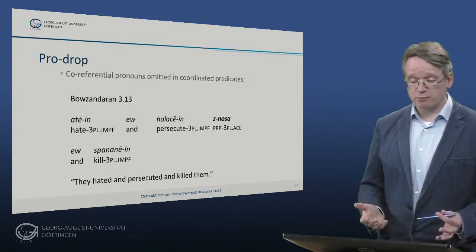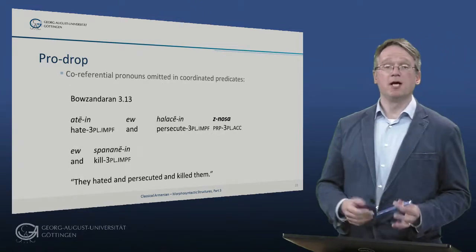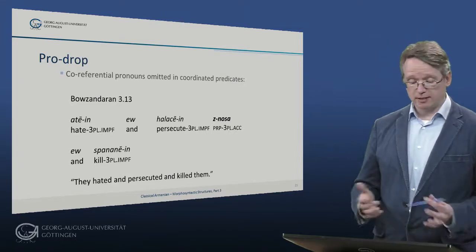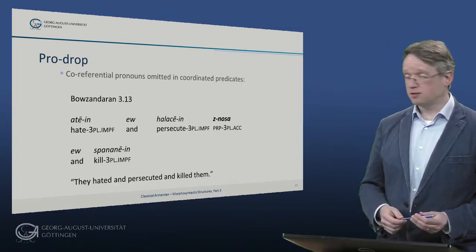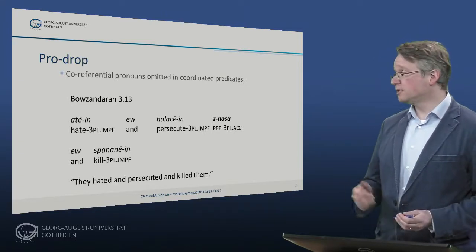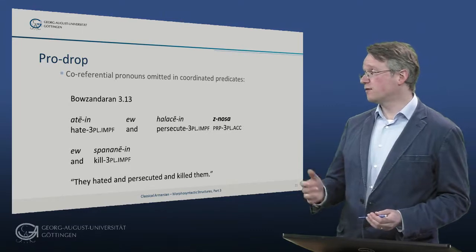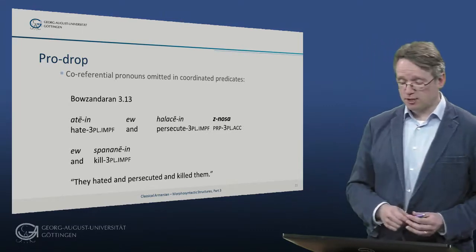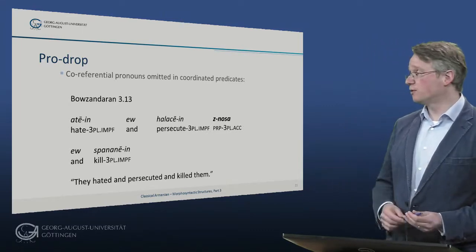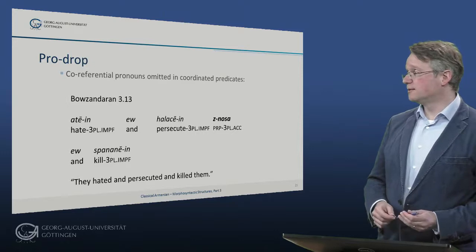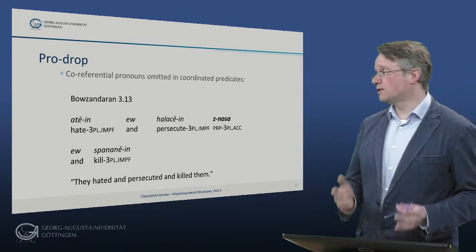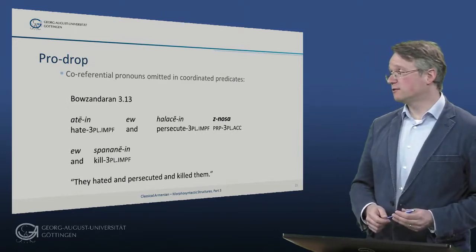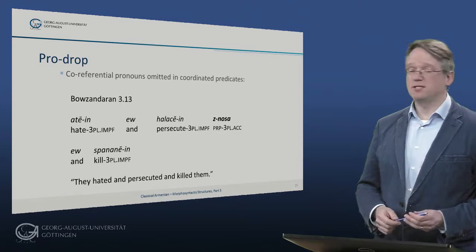Coreferential pronouns may be dropped in coordinated predicates. For example: 'atein, halatein, esnosajev, spananein' — here 'esnosa' is the object pronoun and is the object of all three predicates in the sentence.